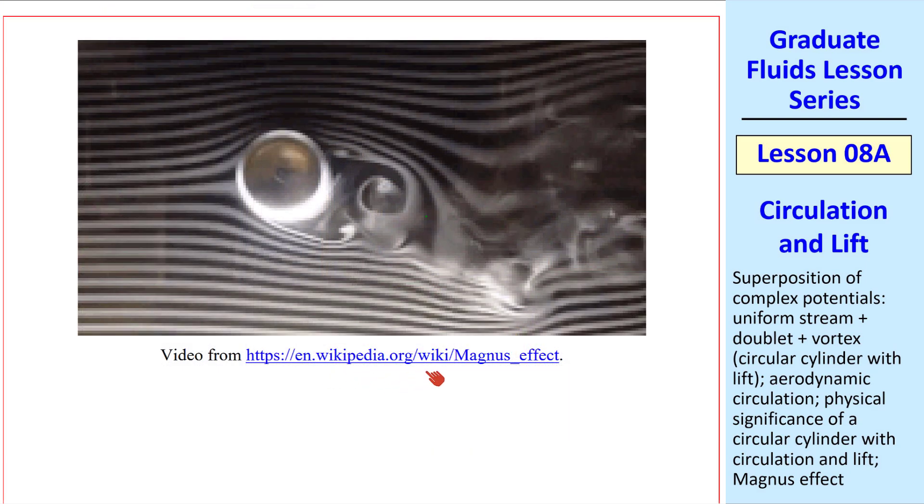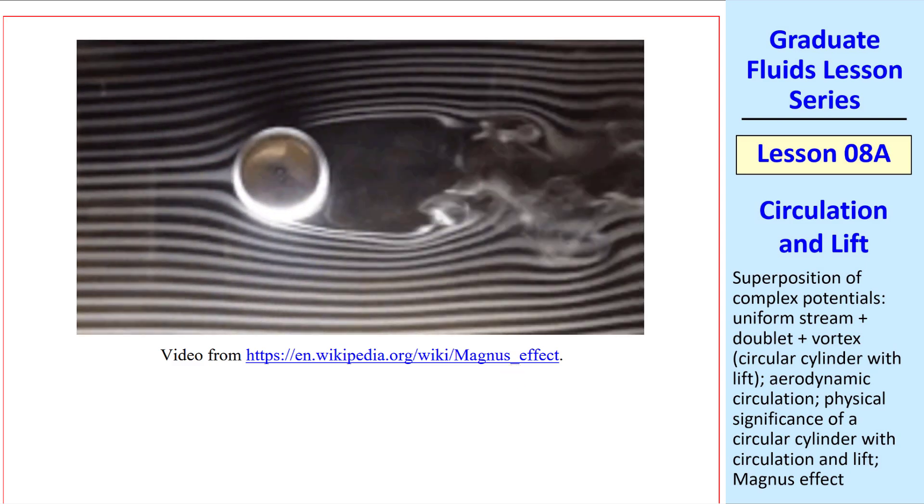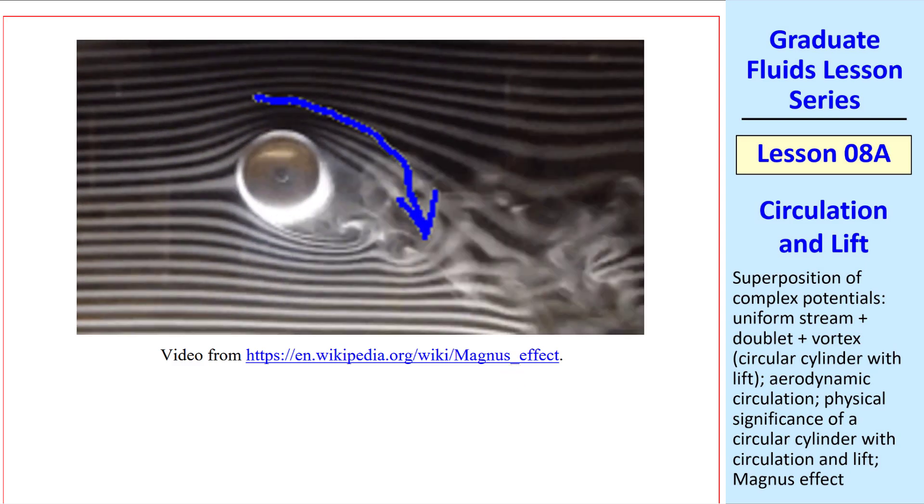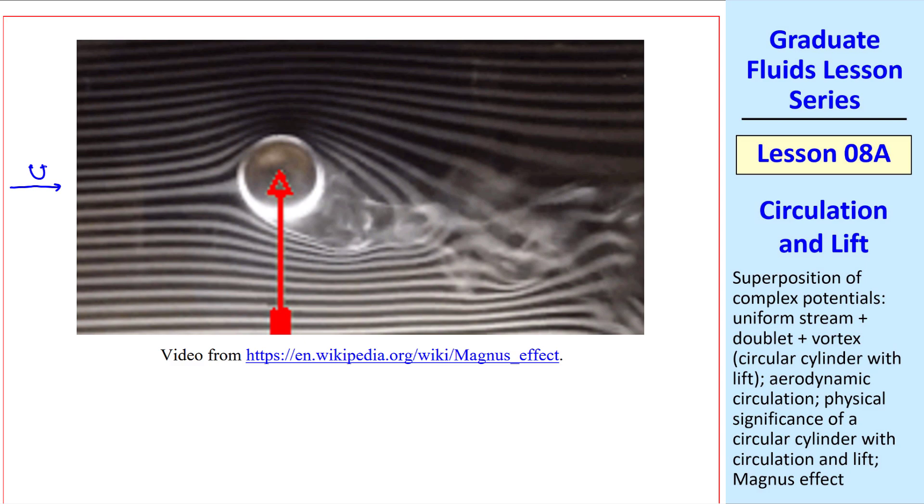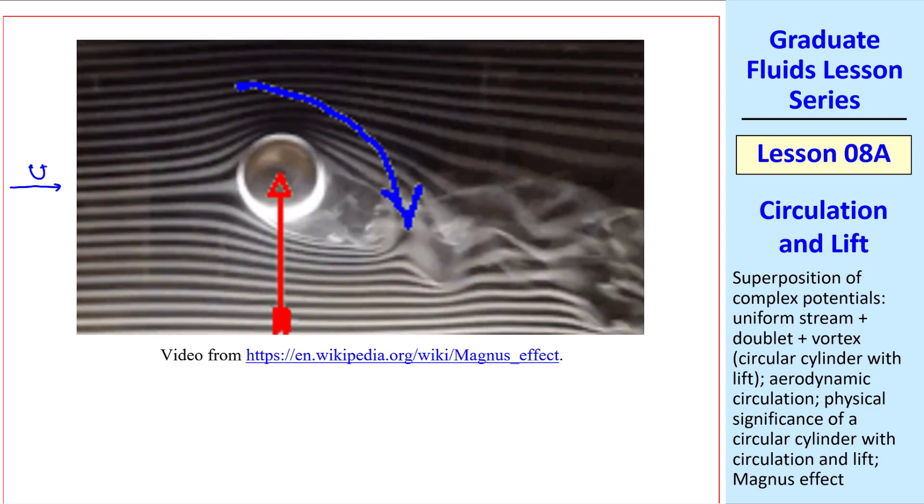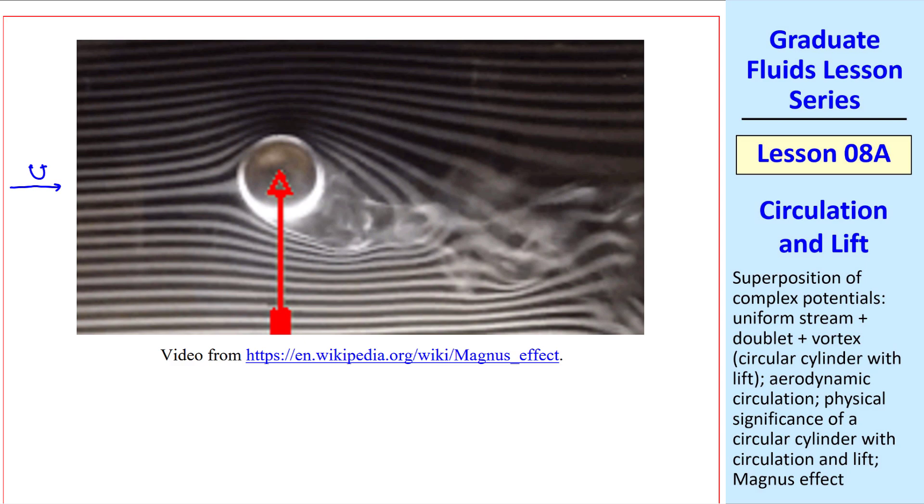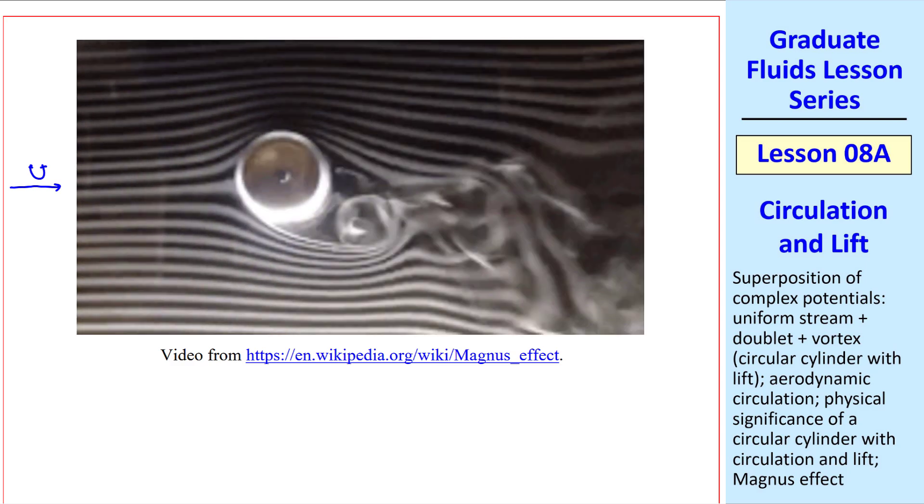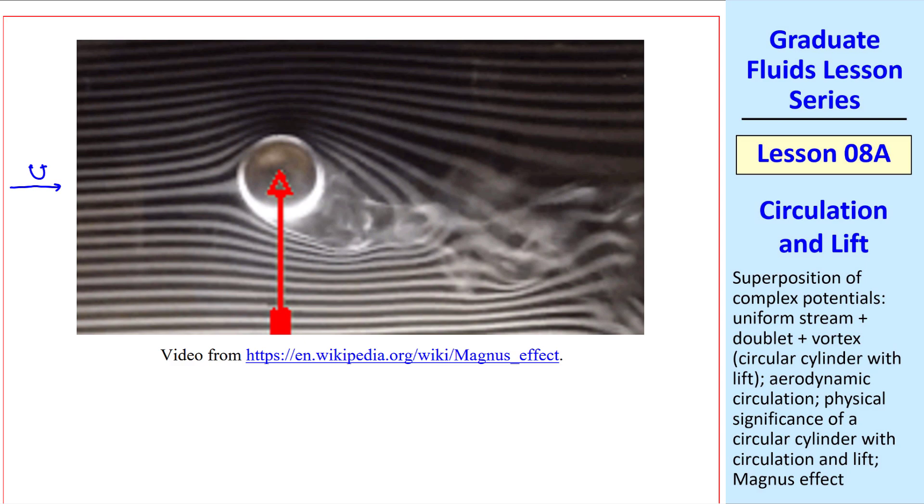Wikipedia also has a video of this Magnus effect. I flipped it both horizontally and vertically, so that the direction of the flow agrees with the way we've been describing it. Notice how the flow turns downward when the cylinder starts spinning. And notice the staggered vortices of opposite sign.